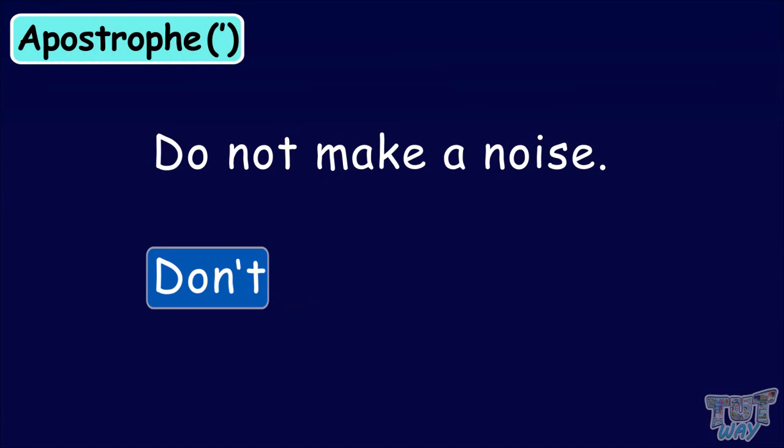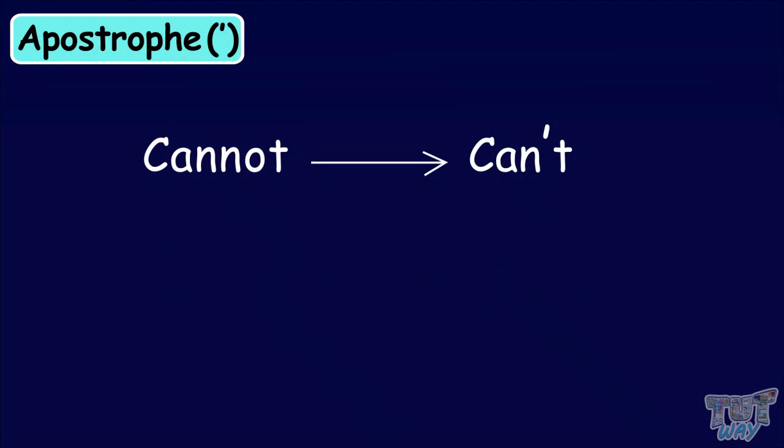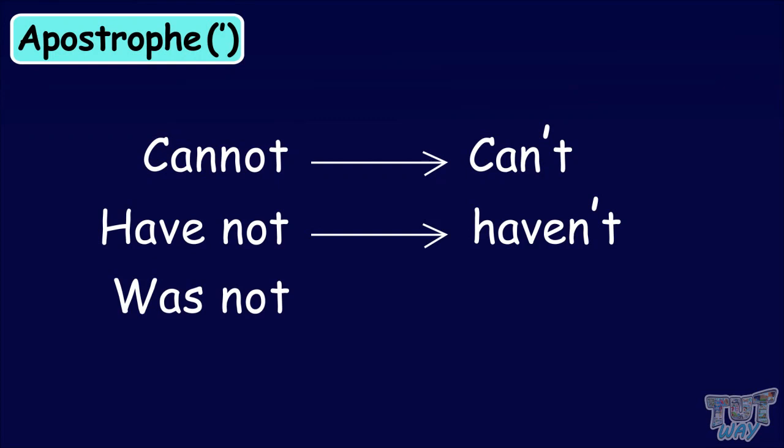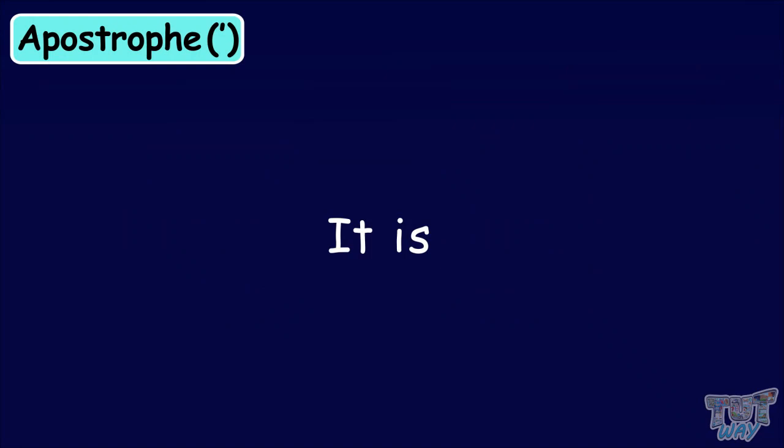Here are some more examples. 'Cannot' will become 'can't'. 'Have not' will become 'haven't'. 'Was not' can be written as 'wasn't'. In all these words, we have omitted the 'o' and put apostrophes in its place. Here is another example. We can make a short form of 'it is' by omitting the 'i' of 'is'. 'Who is' can be written as 'who's'.